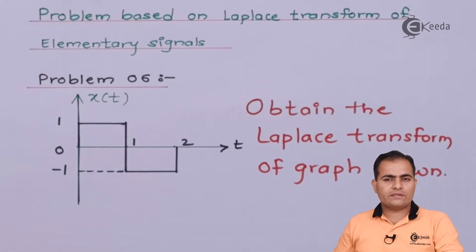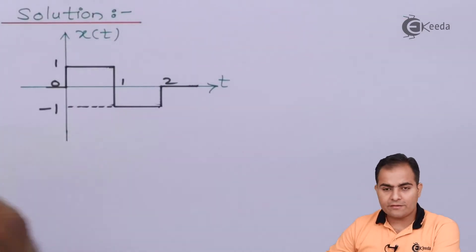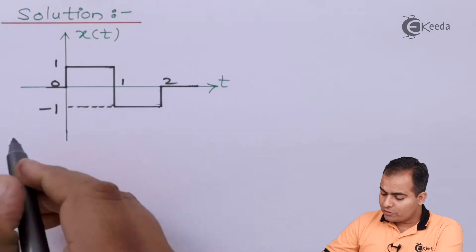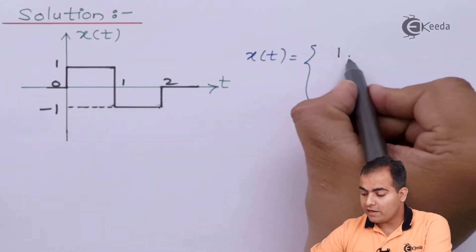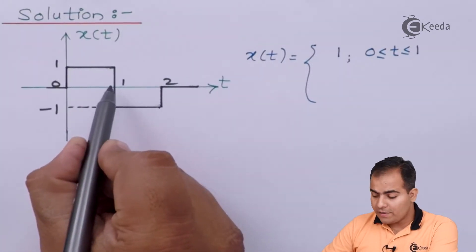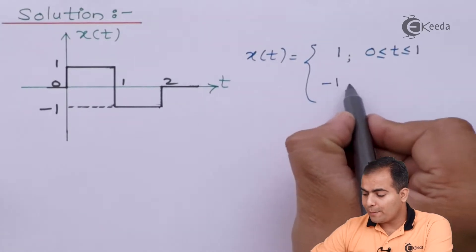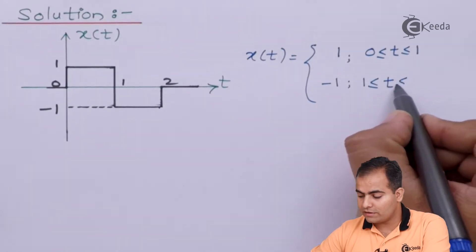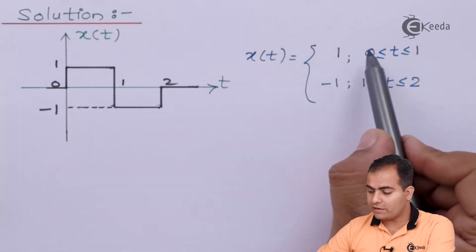We will first find the equation of this graph and then move on to its Laplace transform. This is X(T) plotted here. Between 0 to 1, X(T) has amplitude 1, so we write X(T) equals 1 for 0 to 1. Between 1 to 2 the amplitude changes to minus 1, so we write minus 1 for the region 1 to 2.